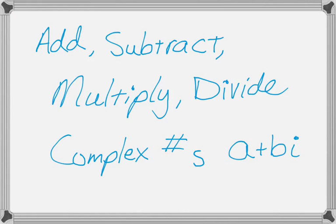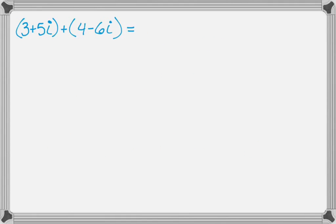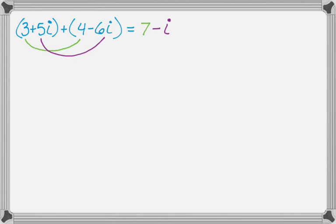Let's start out with some addition. Say I have 3 plus 5i, that's one complex number, plus 4 minus 6i — that's the second complex number. You want to add the real parts: 3 and 4 give 7. Then add the imaginary parts: positive 5i plus negative 6i gives minus i. That's really all there is to it — you're just combining like terms.